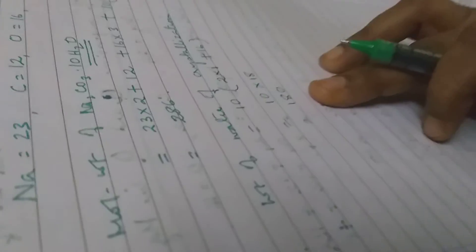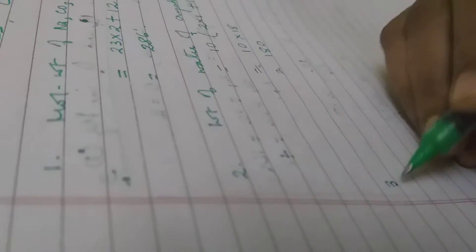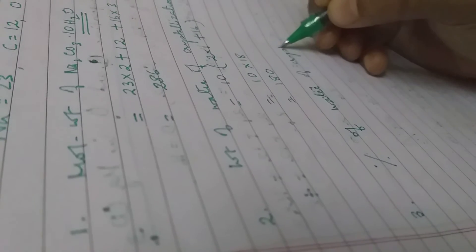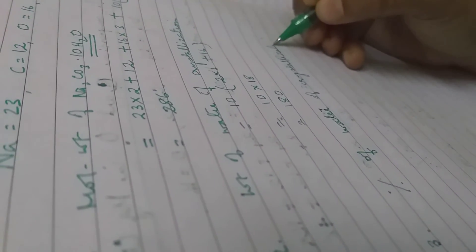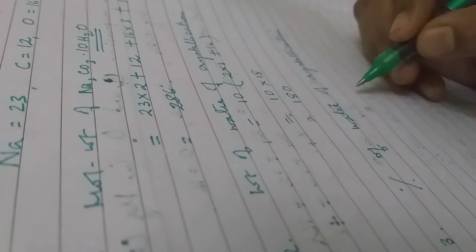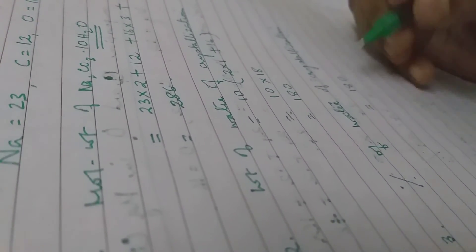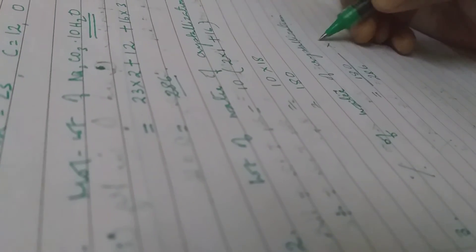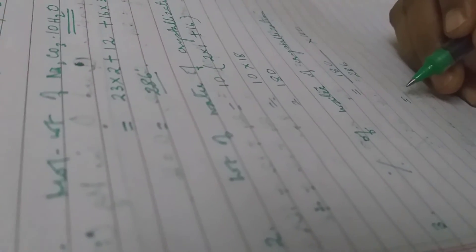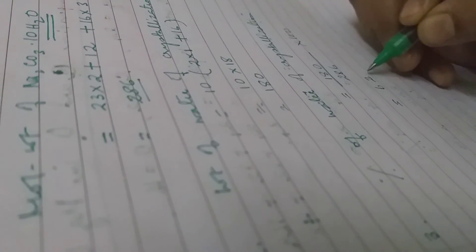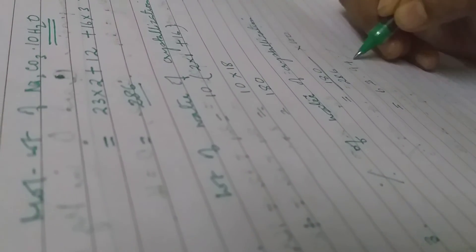So this is your second step. Third step is finally percentage of water of crystallization. In these cases, you will take the weight of water of crystallization divided by the molecular weight times 100. So if you find this out, you will get around 62.94 percent.